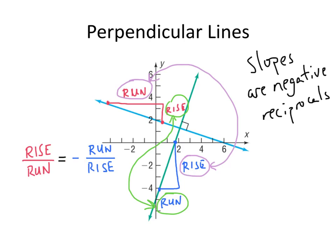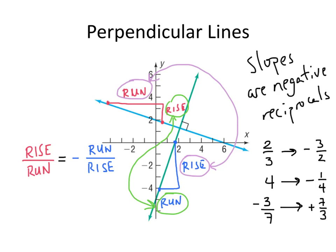The reciprocal of a fraction is what we get when we flip the fraction over — and that's exactly what's happening here. The fraction gets flipped over and also gets a minus sign placed in front of it. For example, if the slope of one line is 2/3, the negative reciprocal would be -3/2. If the slope of one line was 4, the negative reciprocal would be -1/4. If the slope was -3/7, the negative reciprocal would be positive 7/3. So to detect whether two lines are perpendicular, compute their slopes and see whether the two numbers are negative reciprocals of each other. If they are, the lines are perpendicular and form a 90-degree angle where they meet; if not, the lines are not perpendicular.